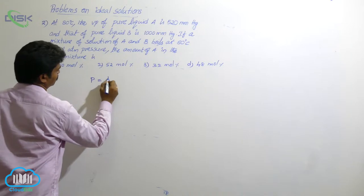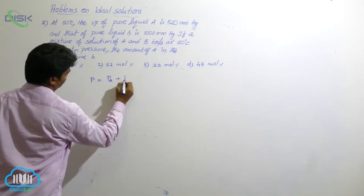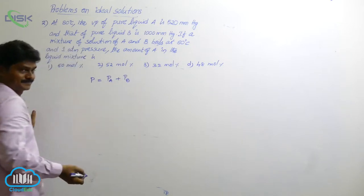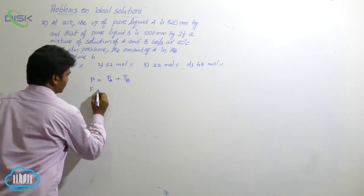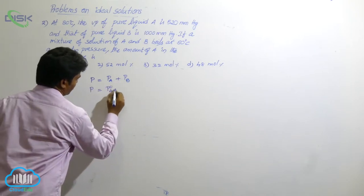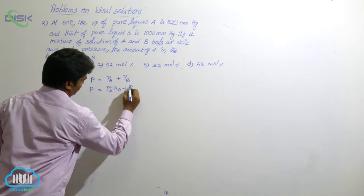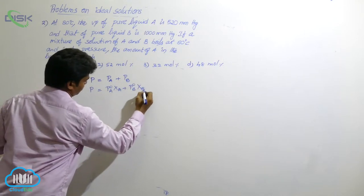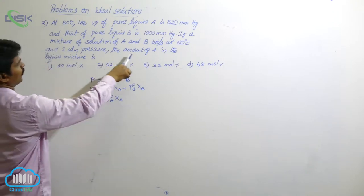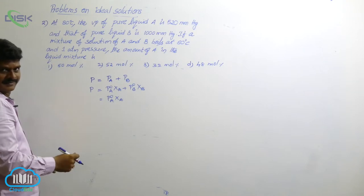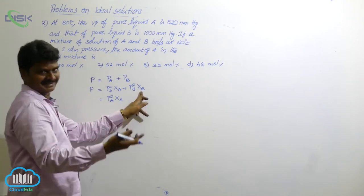So what is the formula here? p total is equal to pA plus pB. This is the formula. pA, how to expand it? pA is equal to p0A times xA plus p0B times xB. We have to find out the mole fraction of A in the mixture.